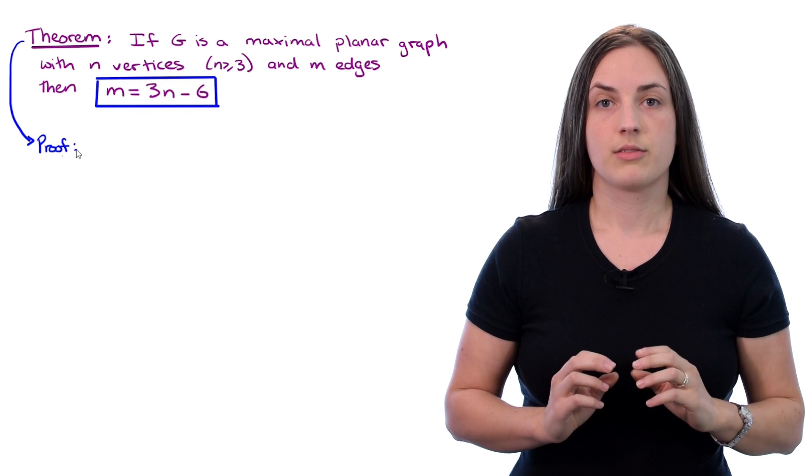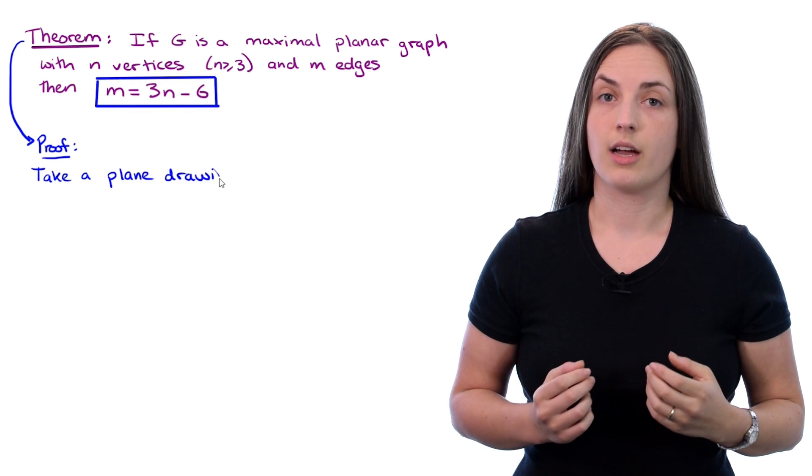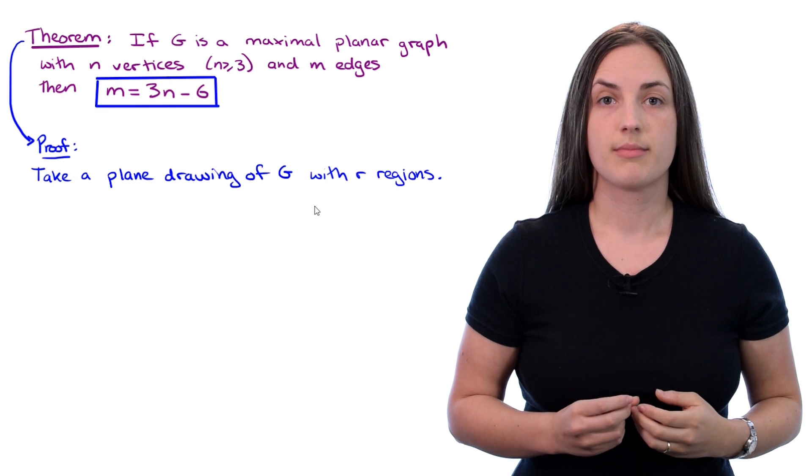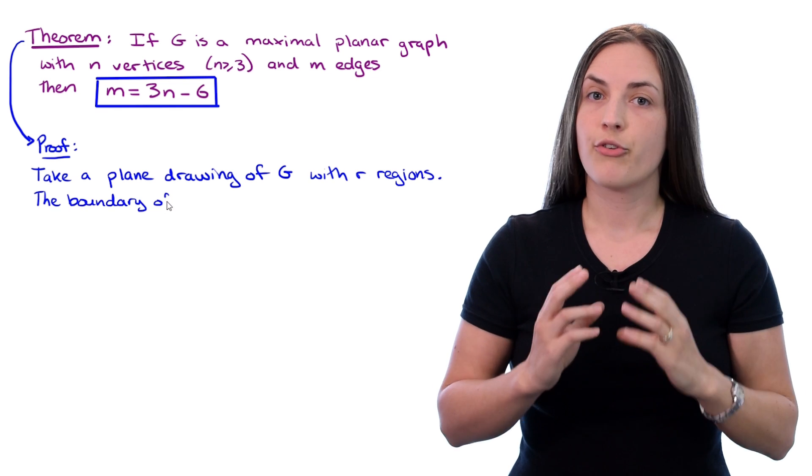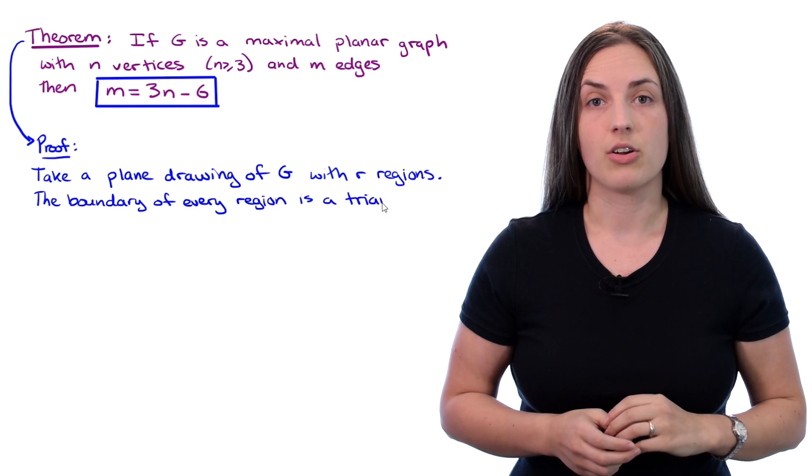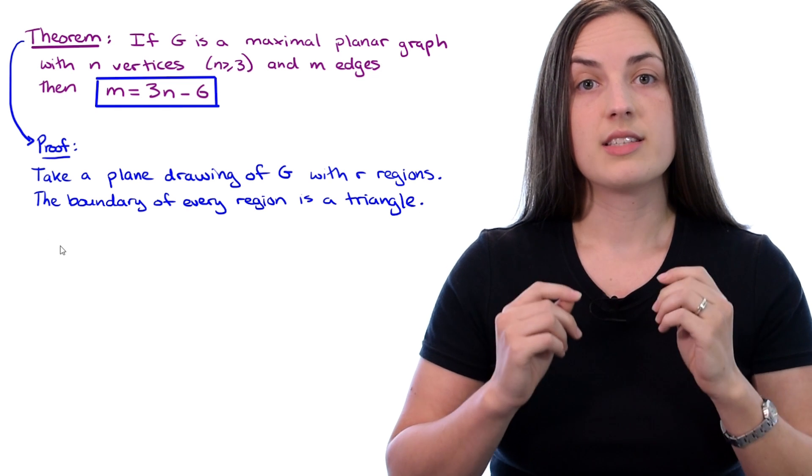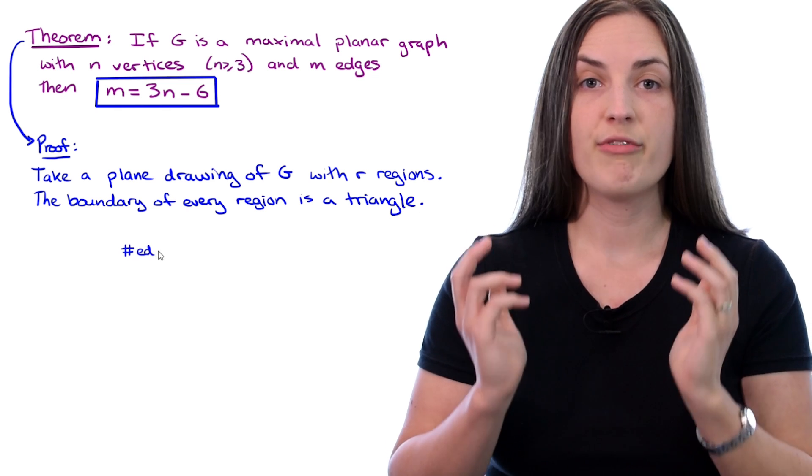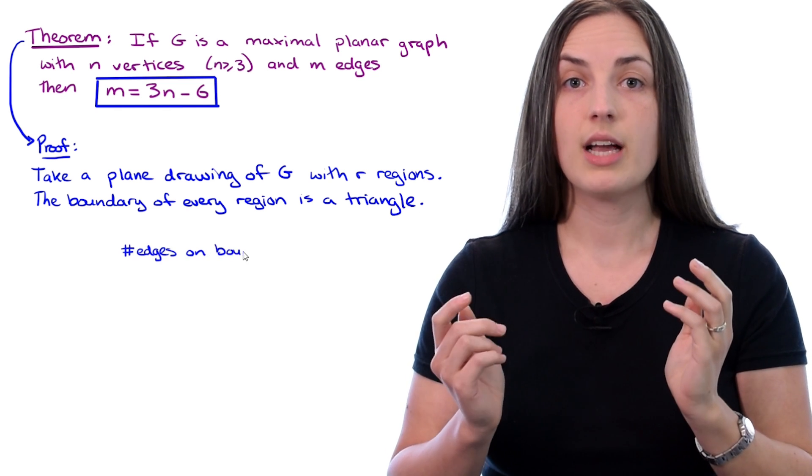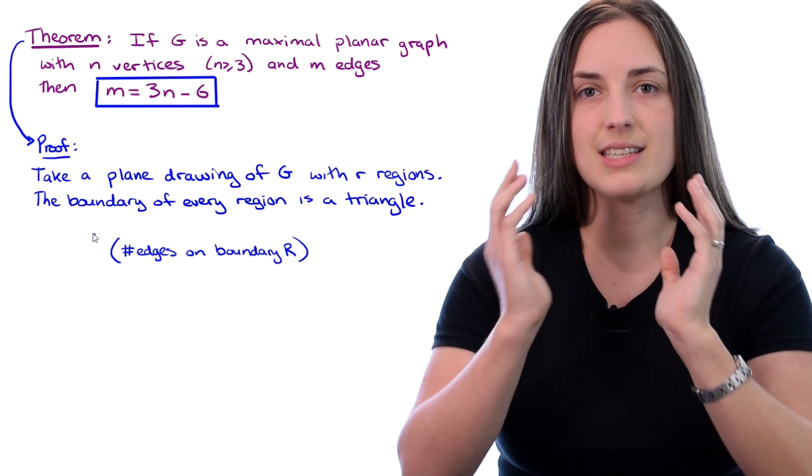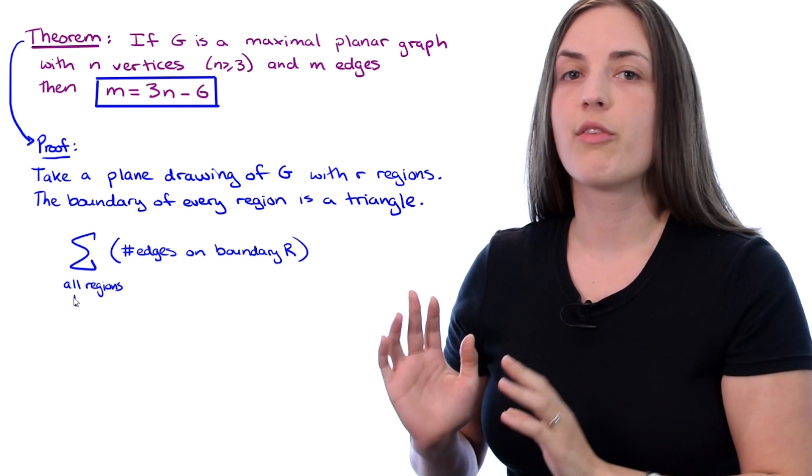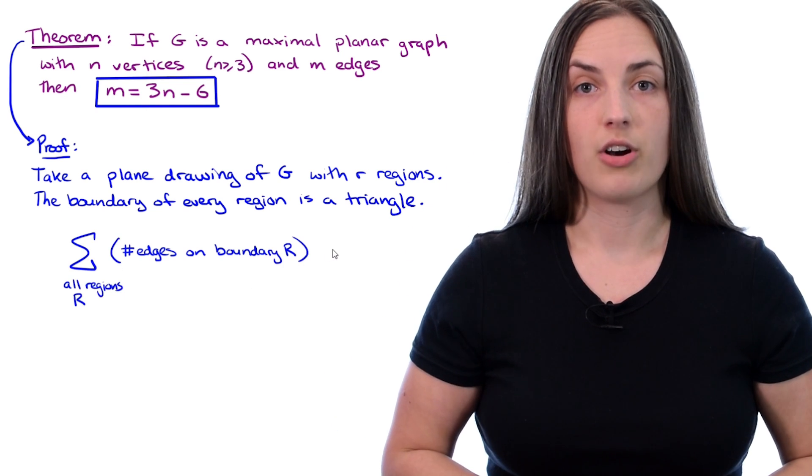To prove this, take a plane drawing of G on R regions, and notice that the boundary of every region is a triangle. Now, consider taking the number of edges on the boundary of region R, and summing this up over all of the regions R in this plane drawing.